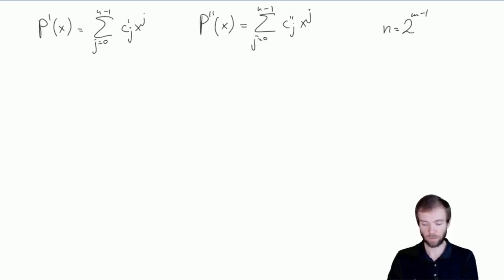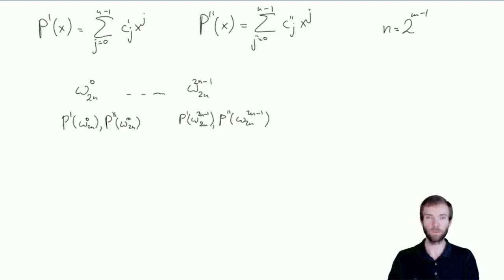So we take the primitive root of unity of degree 2n, we take these 2n points, and we evaluate our polynomials in these points. This evaluation step requires big O of n log n time due to fast Fourier transform. After this step, we know all the values of our polynomials.